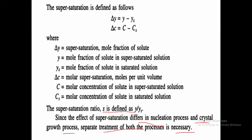Supersaturation is defined as: delta Y equals Y minus Ys, and delta C equals C minus Cs. Delta Y is the supersaturation in terms of mole fraction of solute, where Y is the mole fraction of solute in supersaturated solution and Ys is the mole fraction of solute in saturated solution. Delta C is the molar supersaturation in moles per unit volume, where C is the molar concentration in supersaturated solution and Cs is the molar concentration in saturated solution. The supersaturation ratio S is defined as the ratio of mole fraction of solute in supersaturated solution to mole fraction in saturated solution. The effect of supersaturation differs in the nucleation process and crystal growth process, so separate treatment of both processes is necessary.